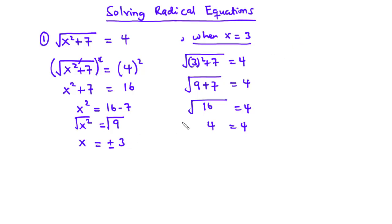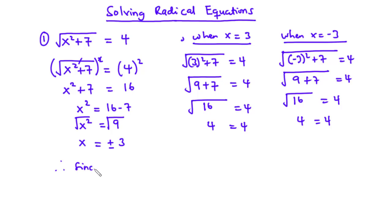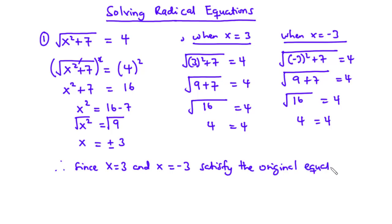Now let's test for when x is equal to negative 3. We have the square root of negative 3 squared plus 7 equals 4. Negative 3 squared is 9, so 9 plus 7 is 16, and the square root of 16 is 4. Since 4 equals 4, x equals negative 3 is also a solution to the equation. Therefore, both x equals 3 and x equals negative 3 are valid solutions.